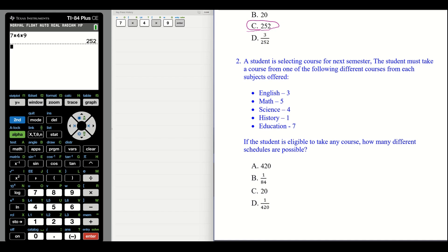Number two: A student is selecting courses for next semester. The student must take a course from one of the following different courses from each subject offered. English, there are three courses. Math, there are five. Science, there are four. History, one. Education, seven courses.